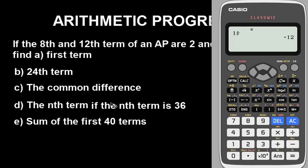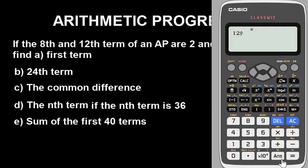For part (b), finding the 24th term: simply come back and change the number from 1 to 24 and press the same option — Regression option 5. The 24th term is displayed. You can also verify by entering 8 and pressing the option to check it returns 2, and entering 12 returns 10 — very accurate and correct.